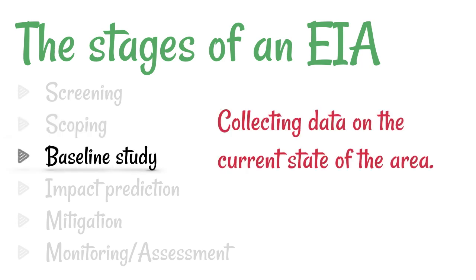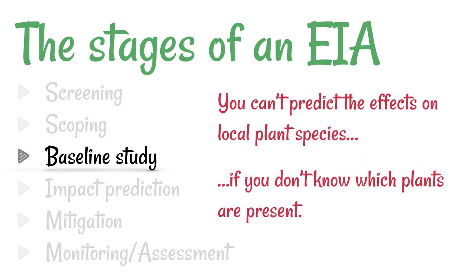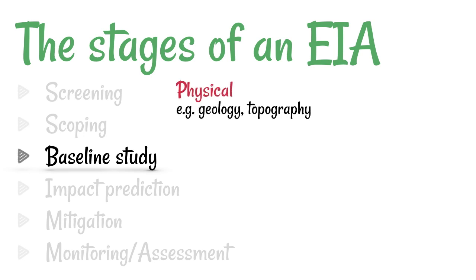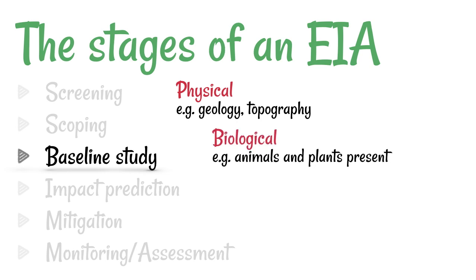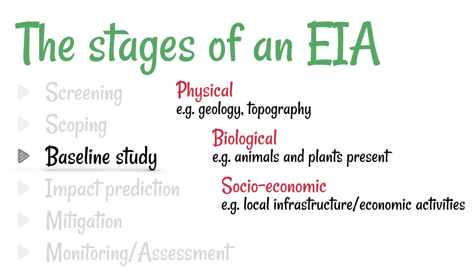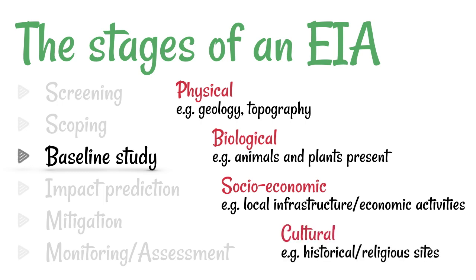A baseline study is a way of collecting data on the current state of the area — the current situation. For example, you can't predict the effects on local plant species if you don't know which plants are already present or in what numbers. We might take into consideration physical factors such as the geology and topography, biological things like animals and plant species present, socioeconomic factors, and also cultural factors. Socioeconomic and cultural factors are not strictly the environment, but they are relevant to creating one of these reports and are often included.